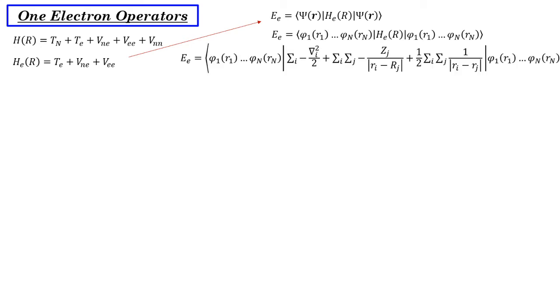And what I do now is I expand the Hamiltonian. So this is the kinetic energy of the electrons. So for all i electrons, this is the kinetic energy term. This is the electron nuclear attraction. So basically these J indices are for nuclei, the i indices are for electrons.